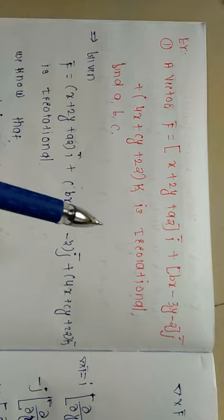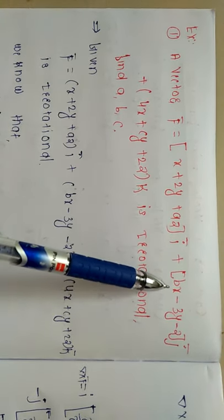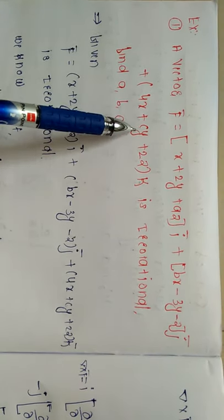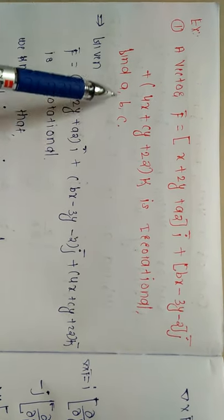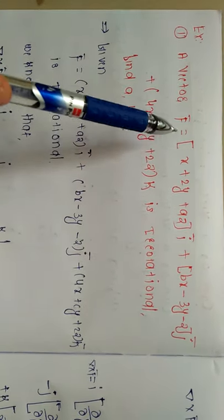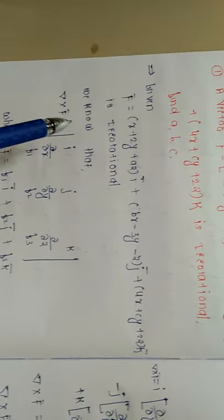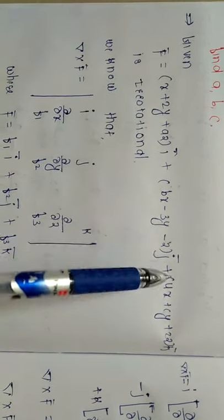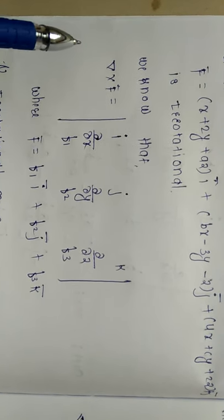A vector point function F = (x + 2y + az)·i + (bx − 3y − z)·j + (4x + cy + 2z)·k is irrotational. Find the values of the arbitrary constants a, b, and c. Since the given function is irrotational, it means del cross f-bar equals zero.